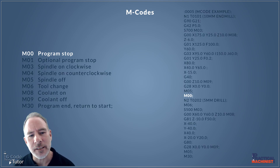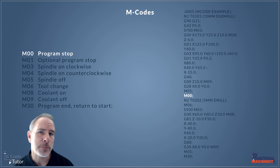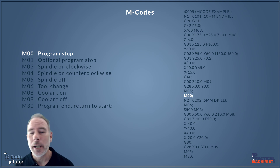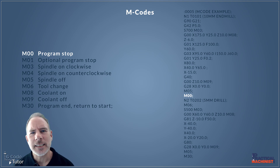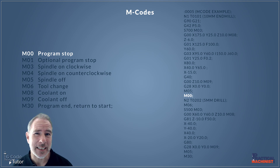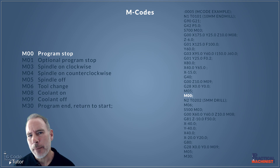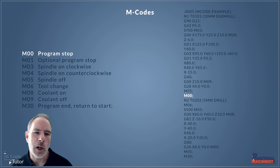I'm going to start off talking about M00, and this is our program stop M-Code. When the machine reads this M-Code it stops, it allows us to open the door, check the part, and carry on once we've hit cycle start. This M-Code is very useful if we need to stop the machine to add cutting compound to a tap, or maybe we need to check a part each time we run the machine for a critical dimension such as a bore. I normally add it to the end of a sequence instead of an optional stop.